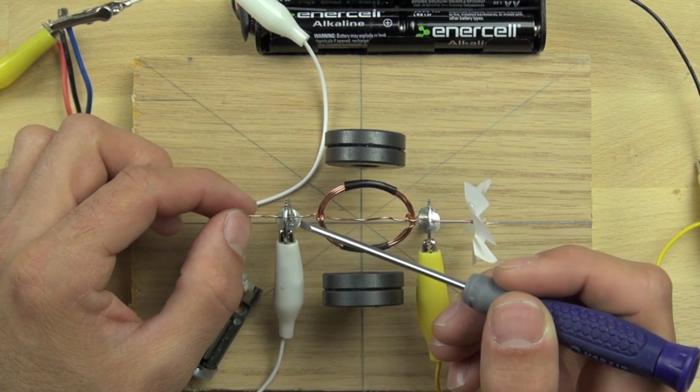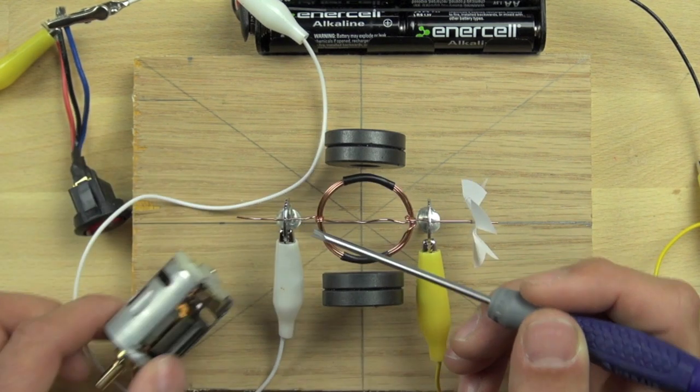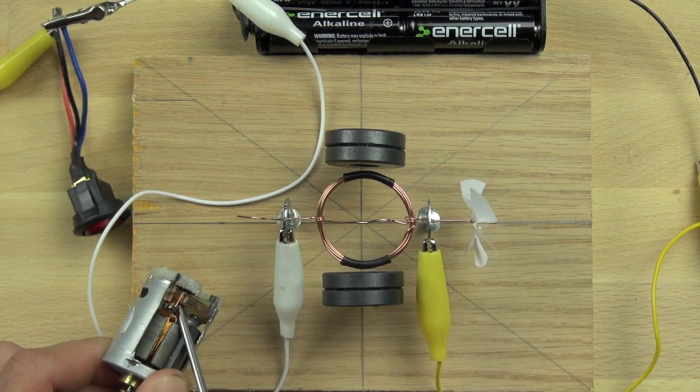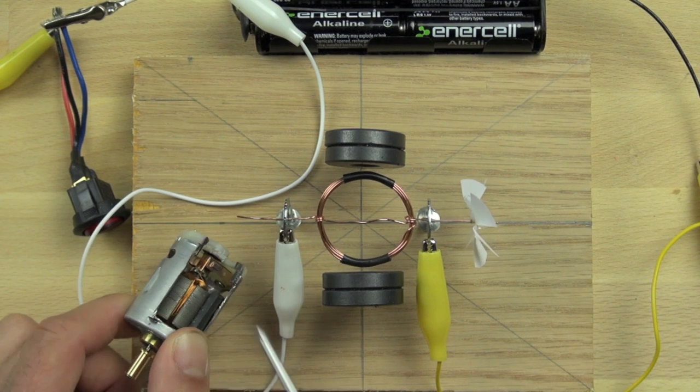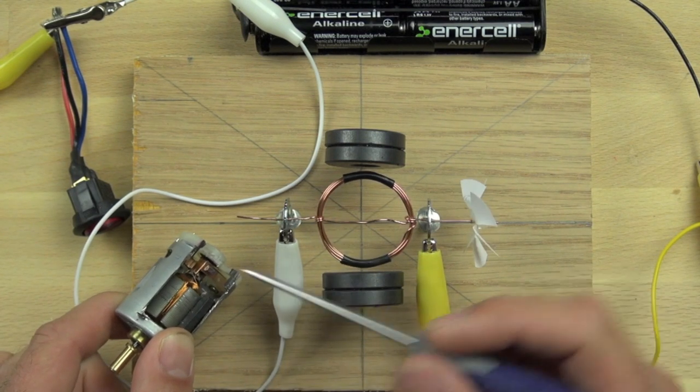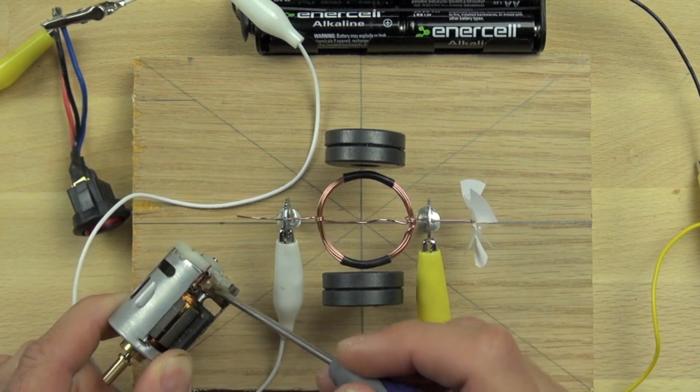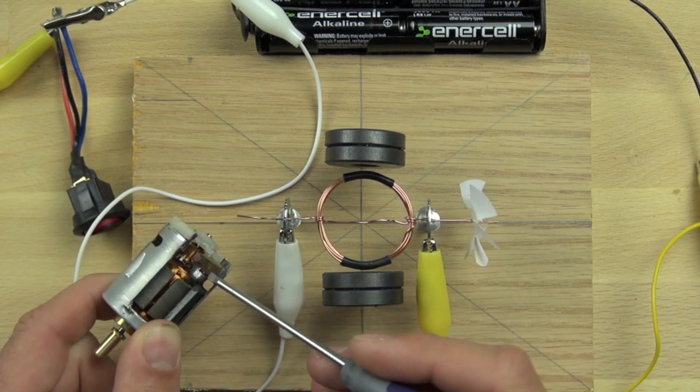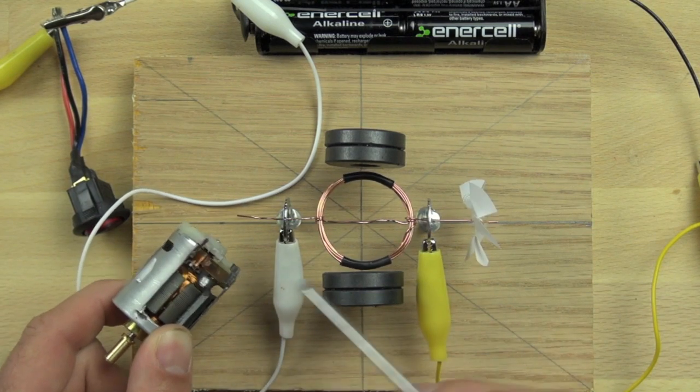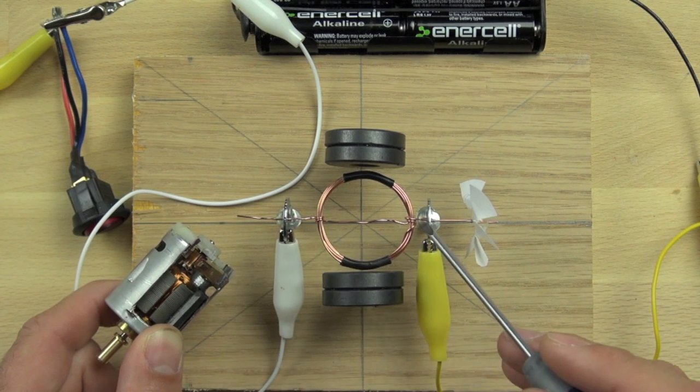And so that means that that section of the copper wire is functioning just like our commutator here in our electric motor. And the brushes, which conduct the electricity from the contact here into the commutator, well, our washers are functioning just like the brushes.